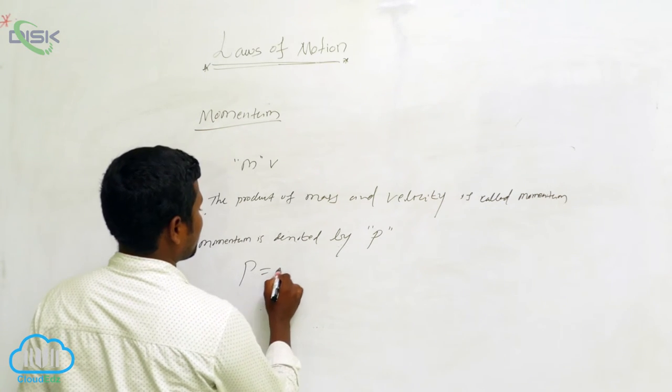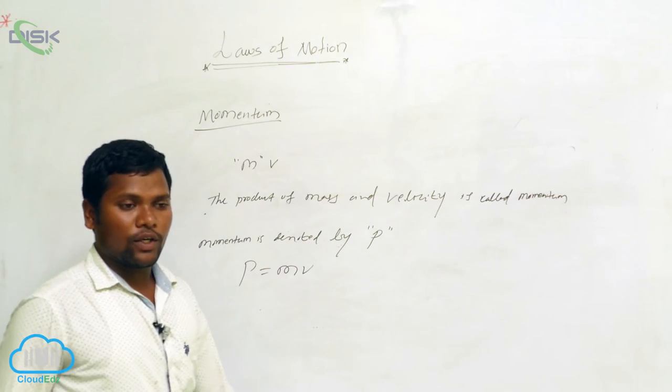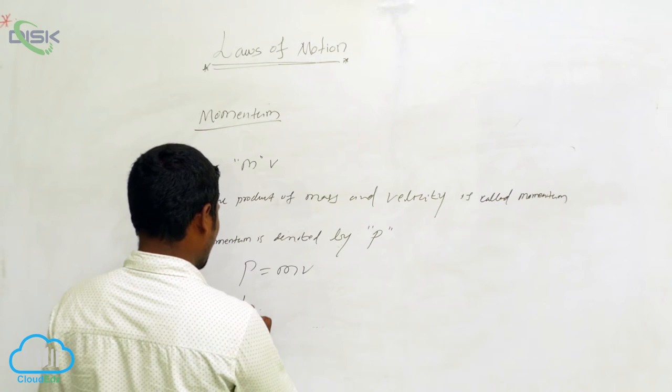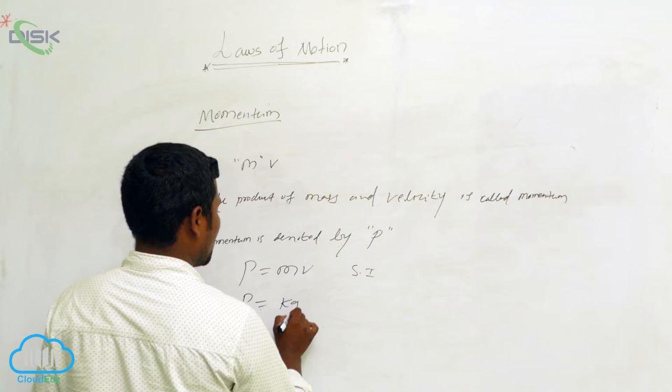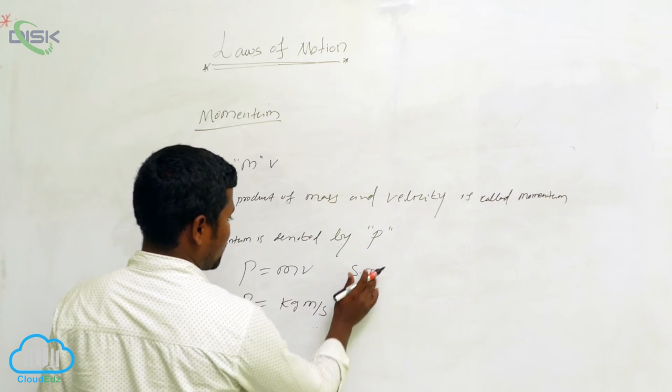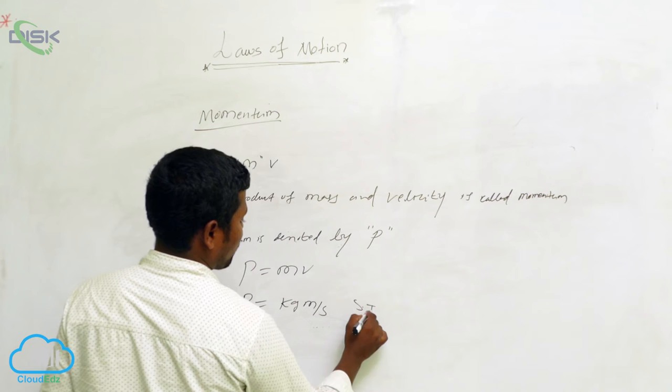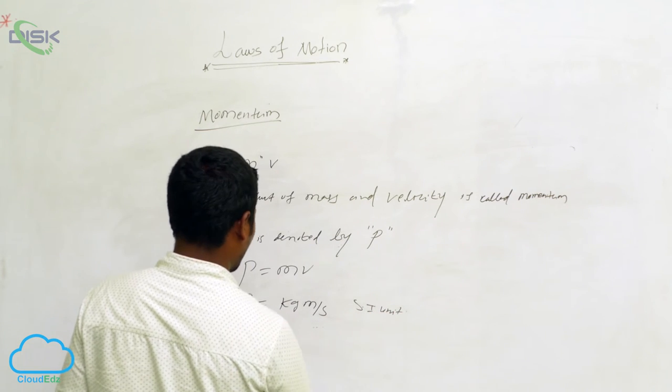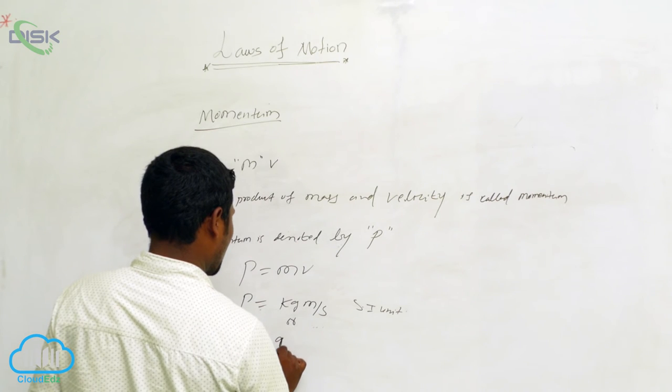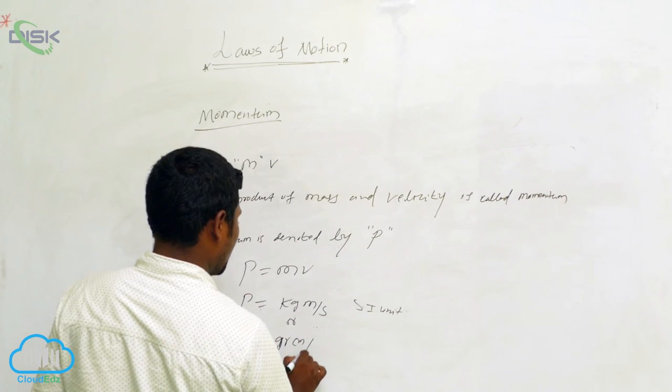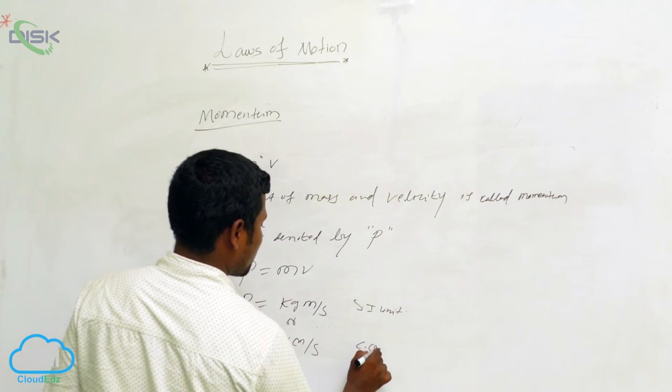Then what we can write? p is equal to mv. Next we are going to write the measurements. First we will write the SI. SI means kg meter per second. This is the SI unit. Next, CGS, grams centimeter by second. This is CGS unit.